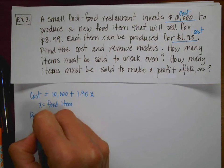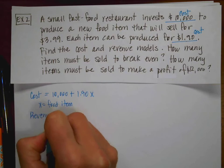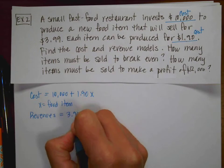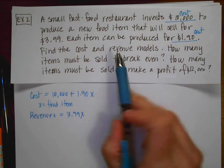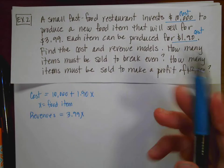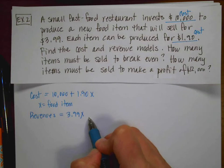And then my revenue, how I make money, is going to equal 3.99 times X. So the first question said, find your cost and revenue models. Here they are.